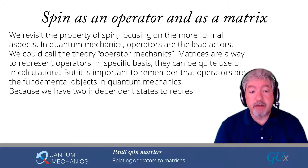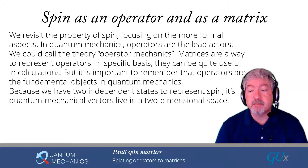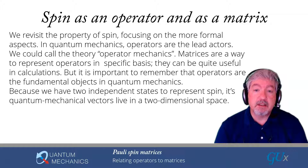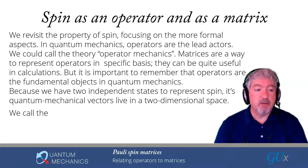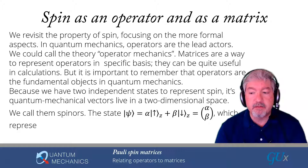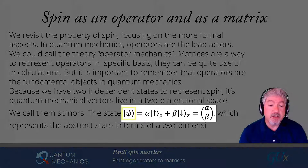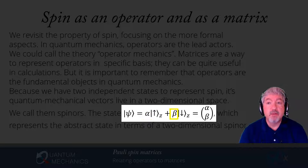So let's talk about spin. For spin, we have two independent states, and so the quantum mechanical vectors live in a two-dimensional space. Every quantum mechanical state can be represented in terms of its coefficients with respect to the two basis vectors, which we normally take to be spin up and spin down oriented along the z-axis. These two-dimensional vectors are called spinors. The state vector psi can be written as a linear combination of up-z and down-z with coefficients alpha and beta, compactly written as the spinor (alpha, beta).